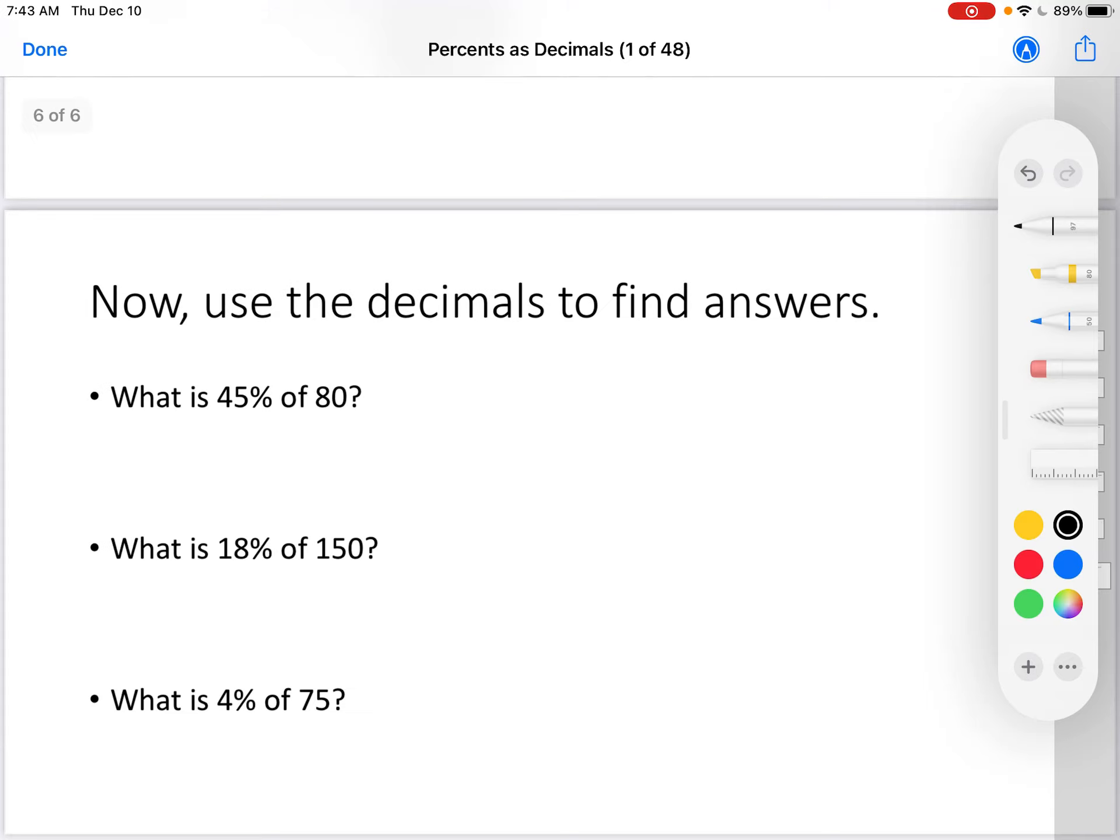Now, let's use this idea of decimals to find answers. First thing we're going to do is change each of these percents to a decimal. So that's 0.45. I could put the zero in front or not. It doesn't make any difference. That's 0.18, and that's 0.04. Remember, it has to be in the hundredths place. So then to find the answer, I have to multiply 0.45 times 80, 0.18 times 150, 0.04 times 75.